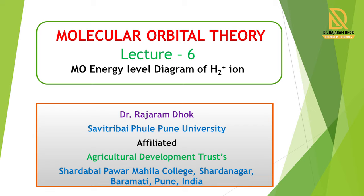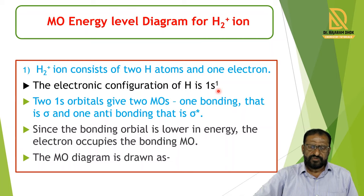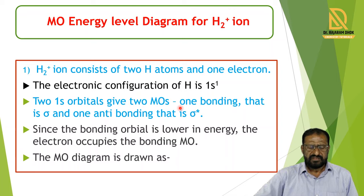In the H2 plus Ion and hydrogen molecule, both have nearly the same type of diagram; only the number of electrons present is different. The H2 plus Ion consists of two hydrogen atoms and one electron. We write the electronic configuration of hydrogen atom as 1s1. H2 plus Ion contains two hydrogen atoms.